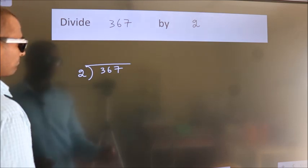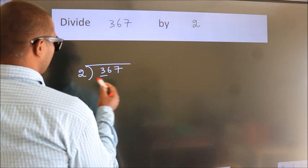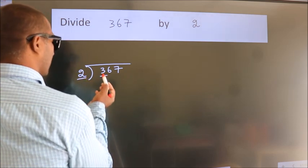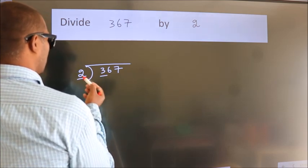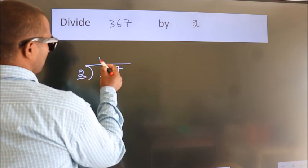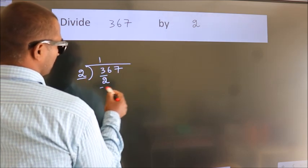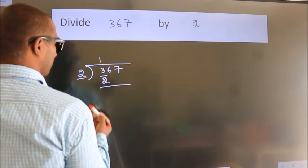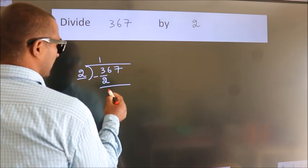Next. Here we have 3, here 2. A number close to 3 in 2 table is 2 once 2. Now we should subtract. We get 1.